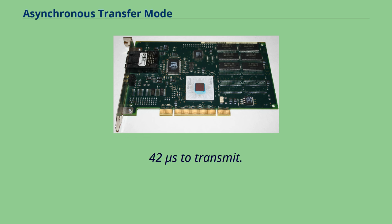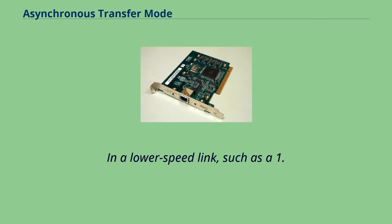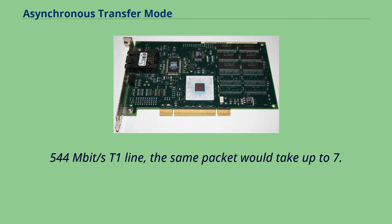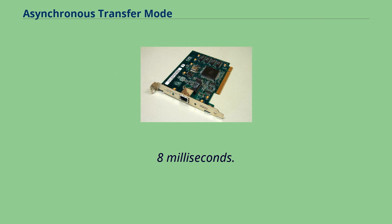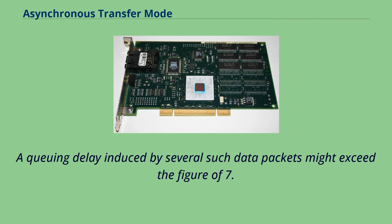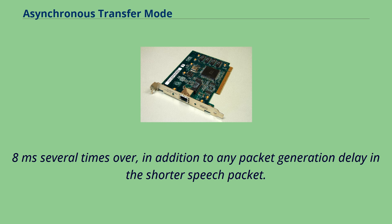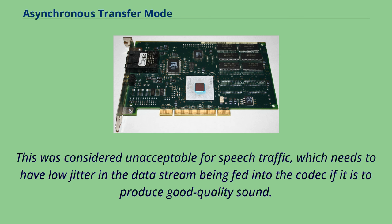On a lower-speed link such as a 1.544 Mbps T1 line, the same packet would take up to 7.8 milliseconds. A queuing delay induced by several such data packets might exceed 7.8 milliseconds several times over, in addition to any packet generation delay in the shorter speech packet. This was considered unacceptable for speech traffic, which needs to have low jitter in the data stream being fed into the codec to produce good quality sound.